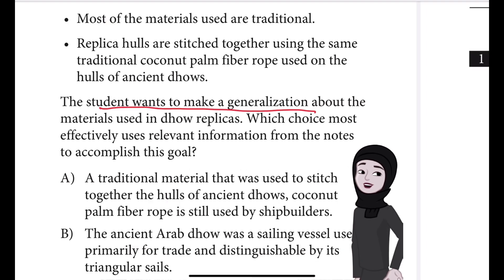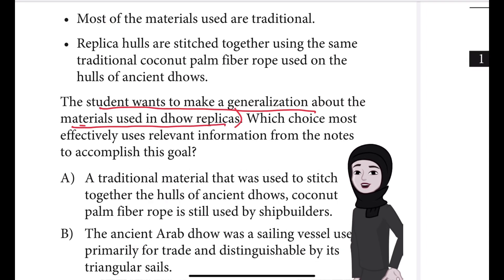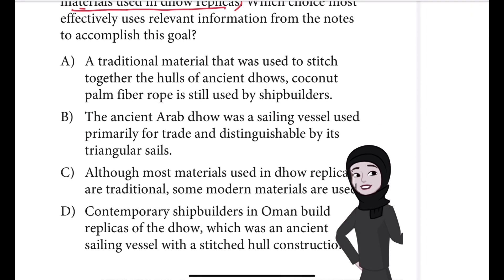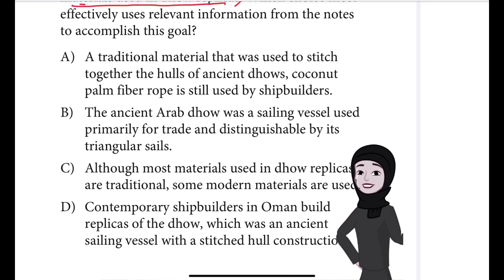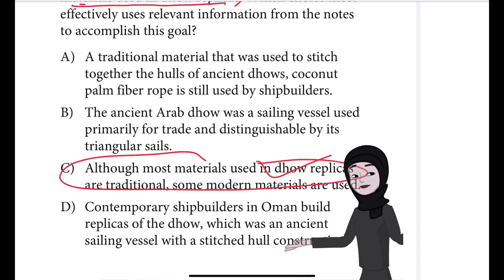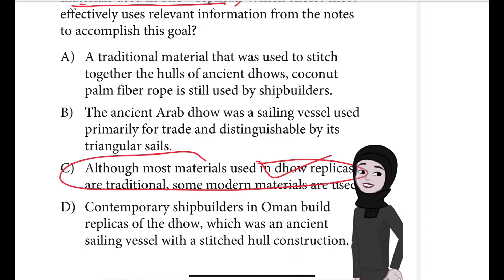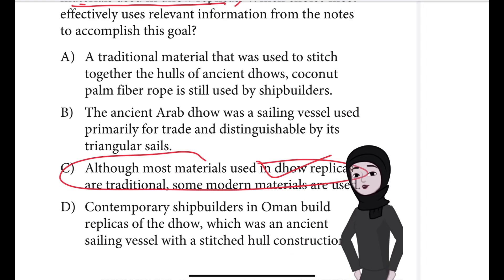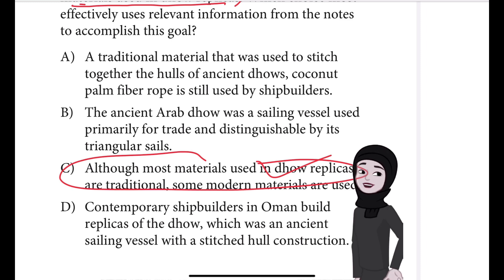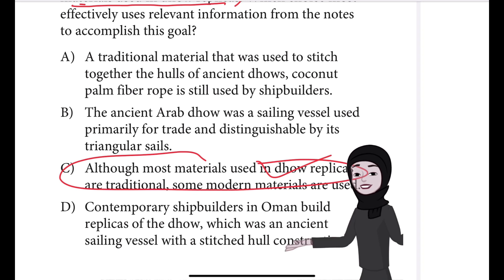The student wants to make a generalization about the materials used in Dhaw replicas — that is what we have to focus on. If you said C, well done, that is the right answer. Choice C is the best answer. The sentence makes a generalization about the materials used in Dhaw replicas, noting that while some modern materials are used, most of the materials are traditional.